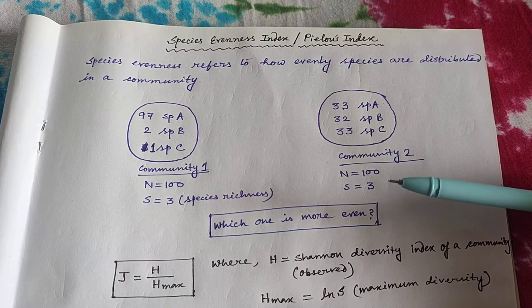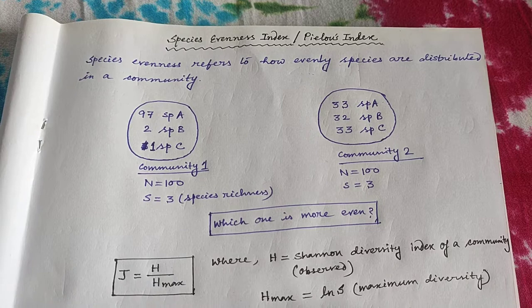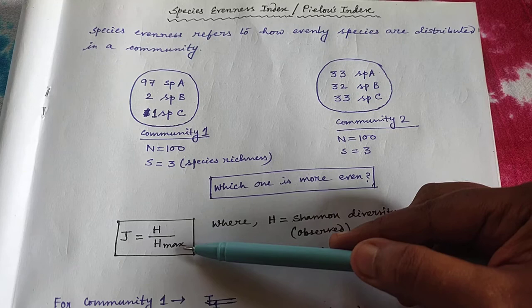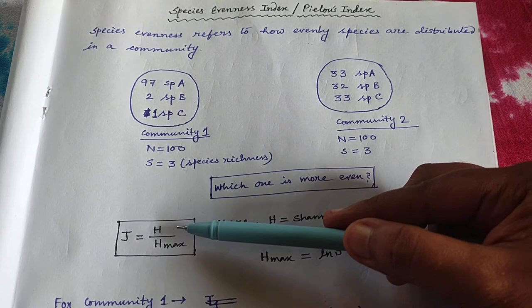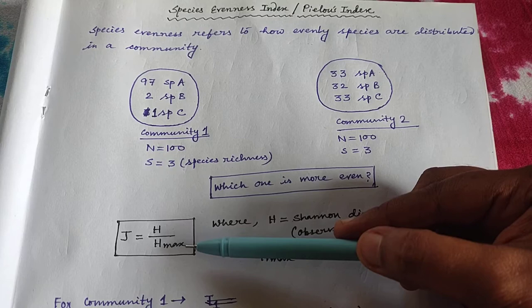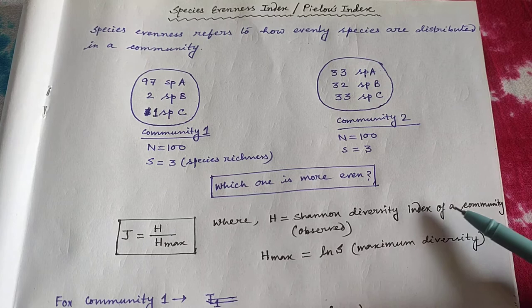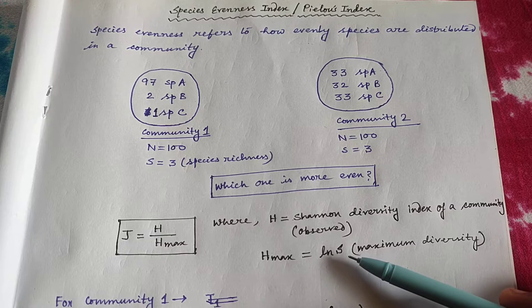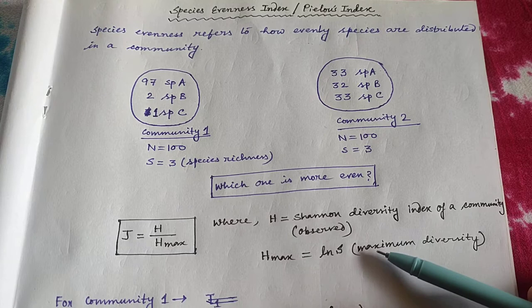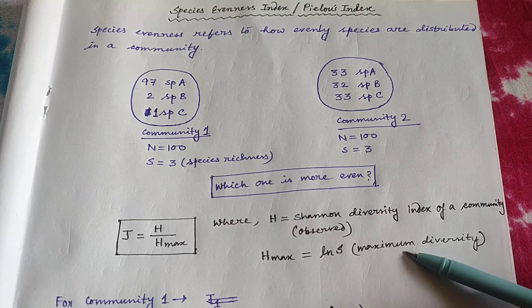The formula is named after the scientist Pielou, and it is: J equals H divided by H-max, where J is the evenness index or Pielou's index, H is the Shannon diversity index, and H-max is the maximum diversity or maximum value of the Shannon index. H is the observed Shannon diversity index of a community, and H-max equals the natural log of S, where S is species richness — indicating the maximum diversity that can be obtained by the community.